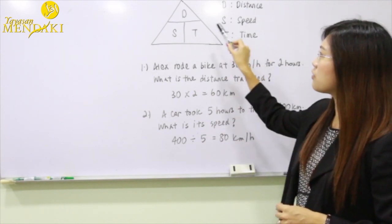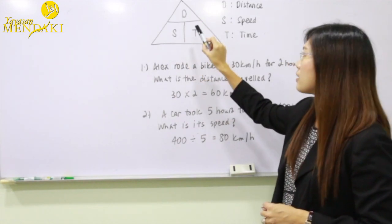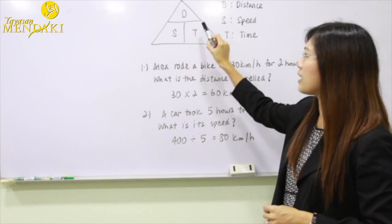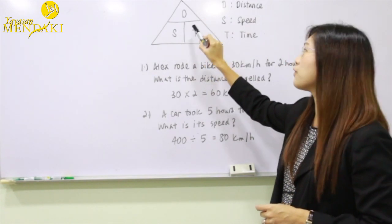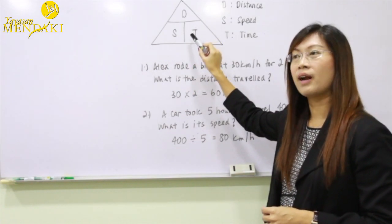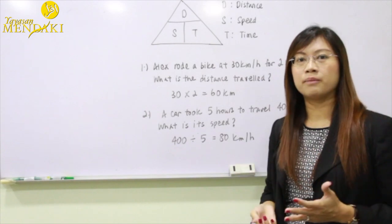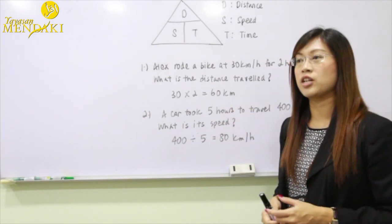In order to find the speed, we're going to take the distance divided by time. To find the time, we take the distance divided by the speed. And to find distance, we take speed multiplied by the time. Let's look at some examples to see how we should apply this formula.